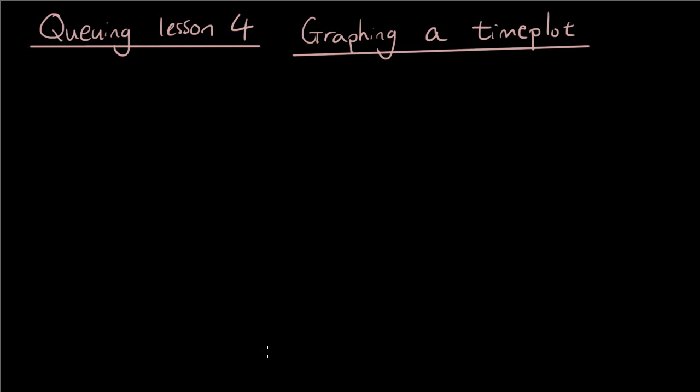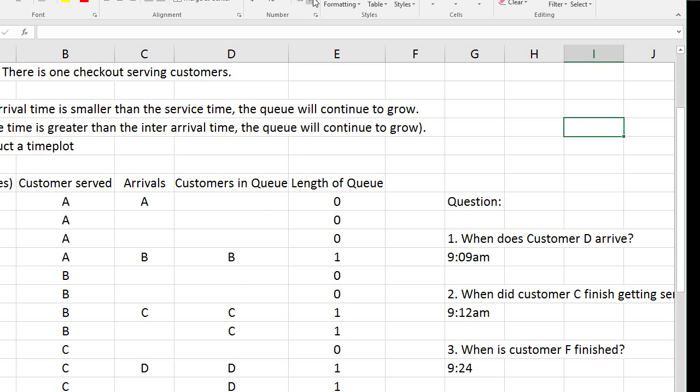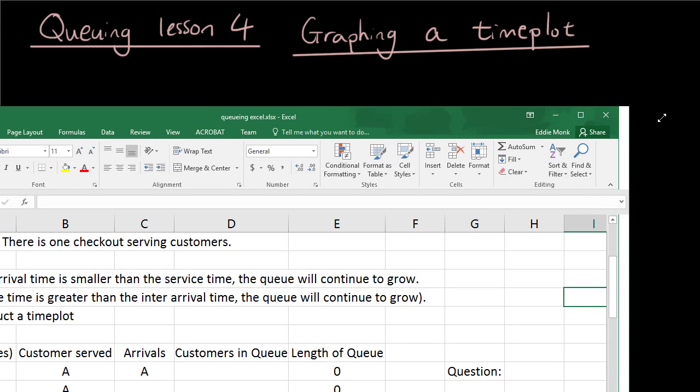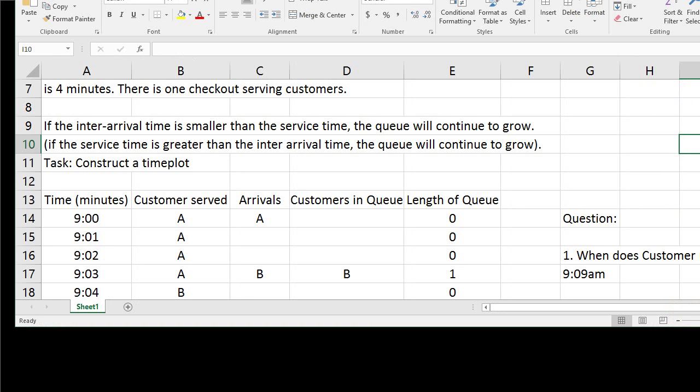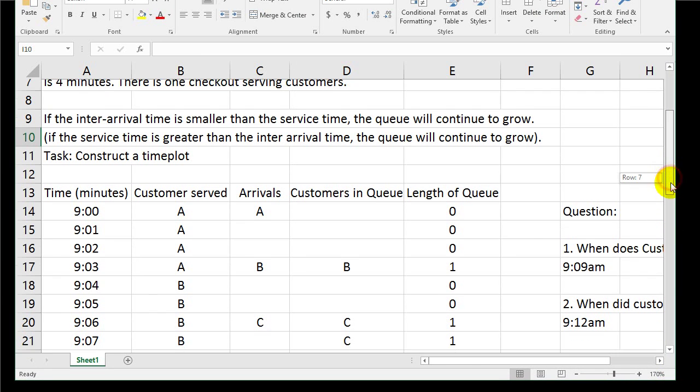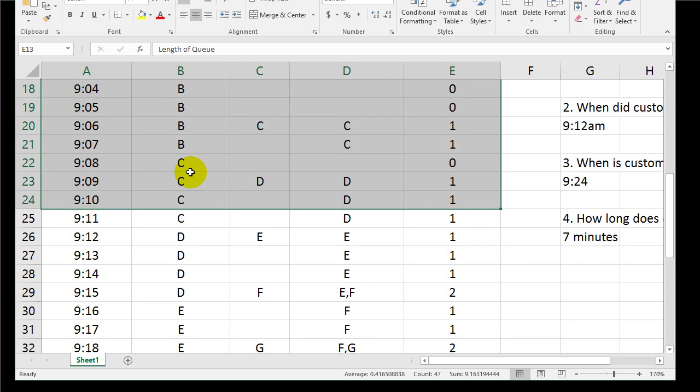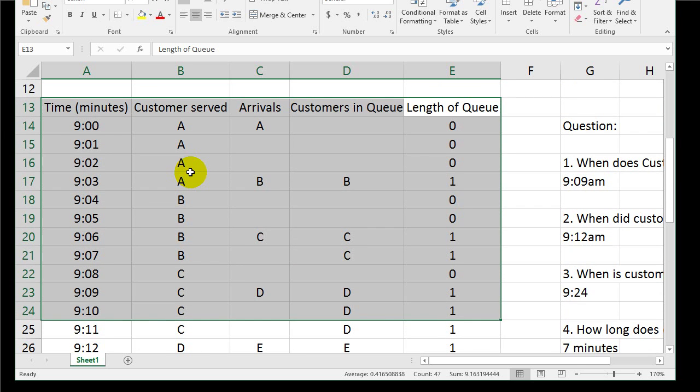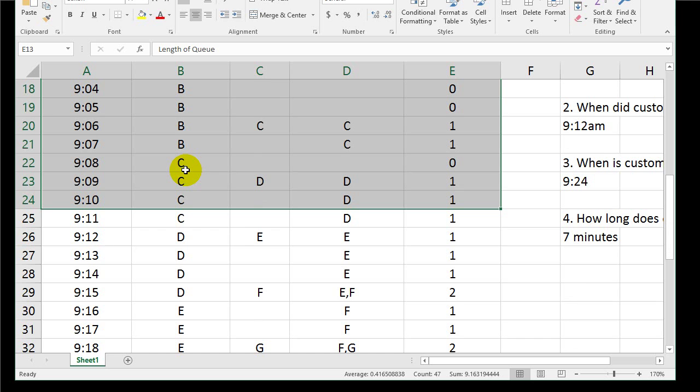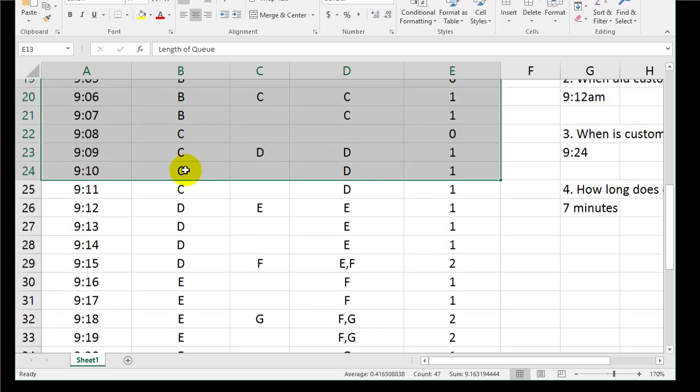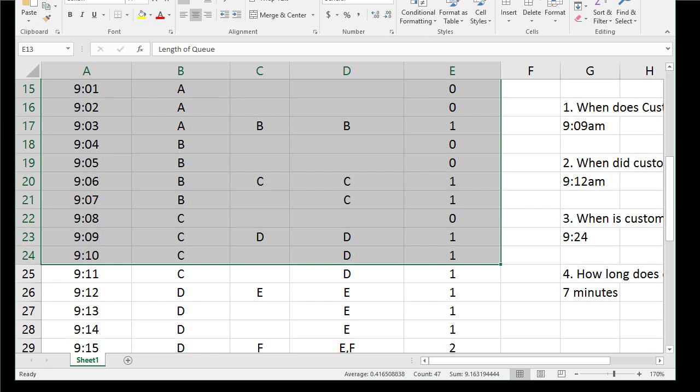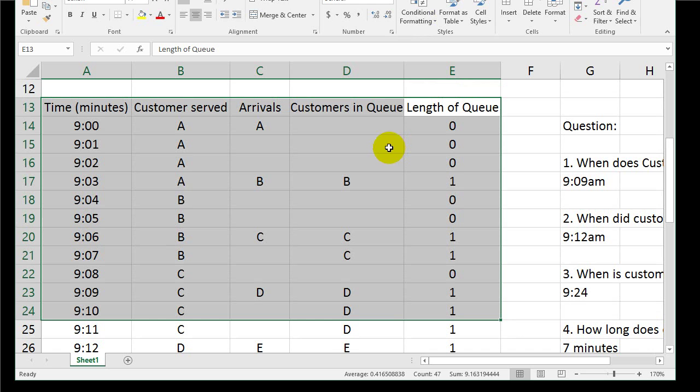This is quite an important skill in queuing. If you guys remember, a few lessons ago we showed you how to create a table. We're now going to graph it. The whole point of graphing a time plot is to get a better idea about the situation. When you're reading a table like this, you probably can't see in a very obvious way how long each person is sitting in the queue, how long they wait for, when they're arriving. It's not very obvious, but when you convert it into a time plot graph, it becomes very obvious.